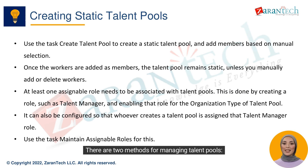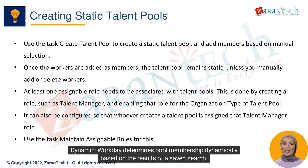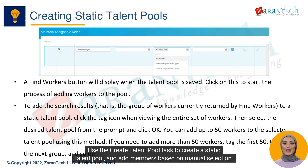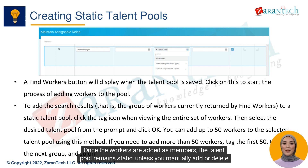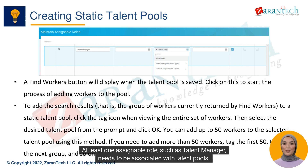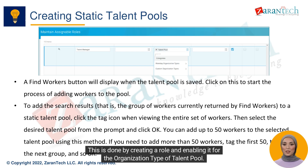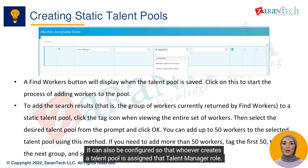There are two methods for managing talent pools. Static: you manually maintain pool membership by tagging workers using the tag icon. Dynamic: Workday determines pool membership dynamically based on the results of a saved search. Use the Create Talent Pool task to create a static talent pool and add members based on manual selection. Once the workers are added as members, the talent pool remains static unless you manually add or delete workers. At least one assignable role, such as Talent Manager, needs to be associated with talent pools. This is done by creating a role and enabling it for the organization type of talent pool, and it can also be configured so that whoever creates a talent pool is assigned that Talent Manager role.